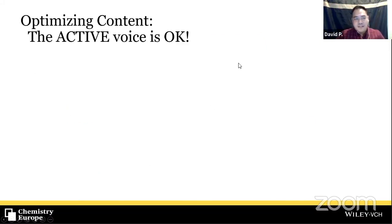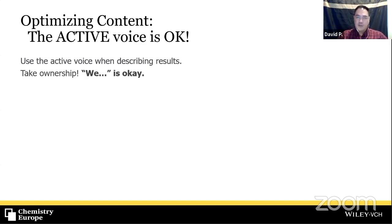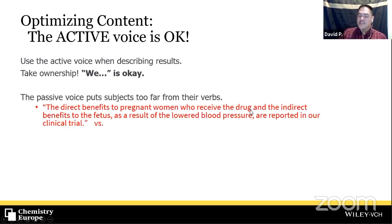To keep sentence structure simple, a good way is to use the active voice. The active voice is fine when writing scientific papers — use it primarily when describing the introduction, results, and discussion. Using 'we' is okay; you need to take ownership of your work. Structurally, the passive voice puts the subject too far away from the verb.